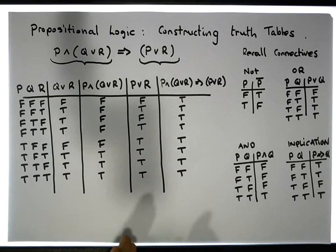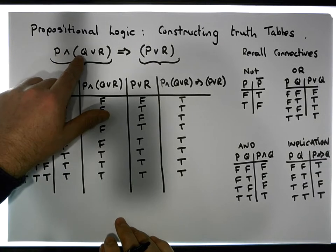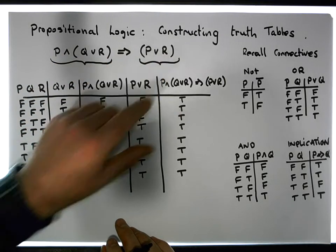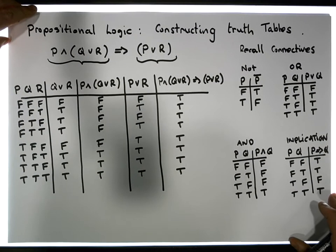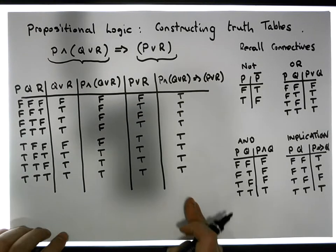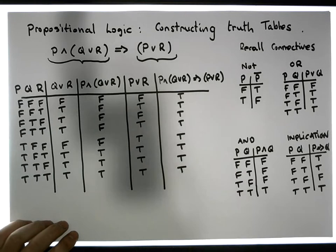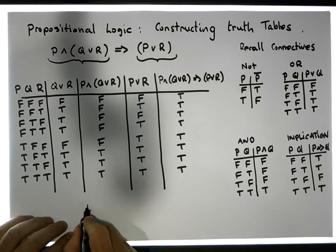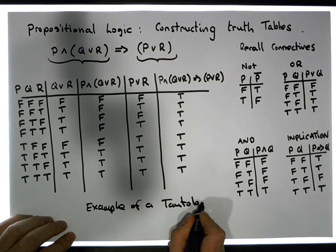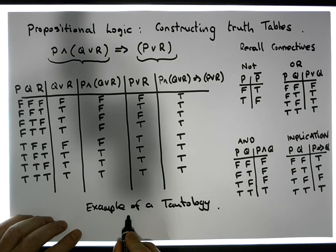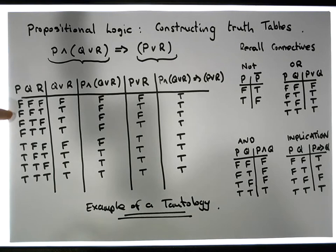What we've actually shown here is that when you have a propositional statement that looks something like this — P ANDed with Q OR r OR implies P OR r OR — this is always true, no matter what inputs are actually passed into the propositional expression. Which from our perspective is really good — it's a nice characteristic of our propositional statement. No matter what we pass in, it's always true. So we call this a tautology. A tautology is a propositional statement that's always true, no matter what the inputs to the statement are.